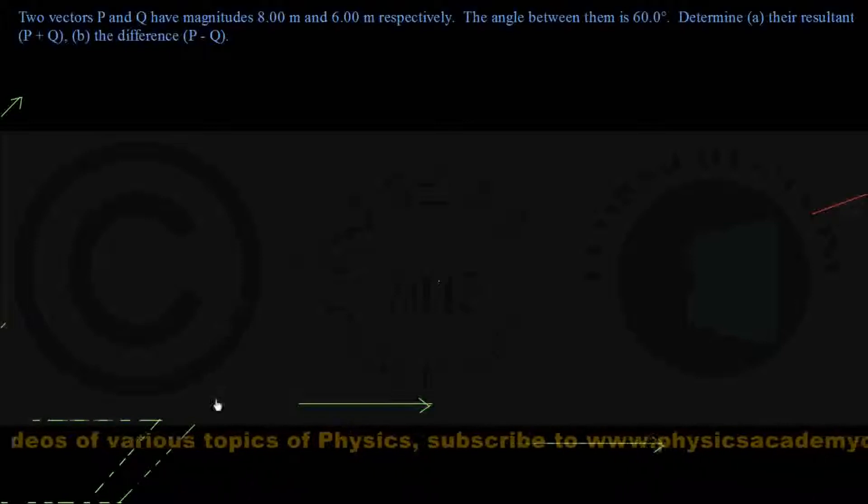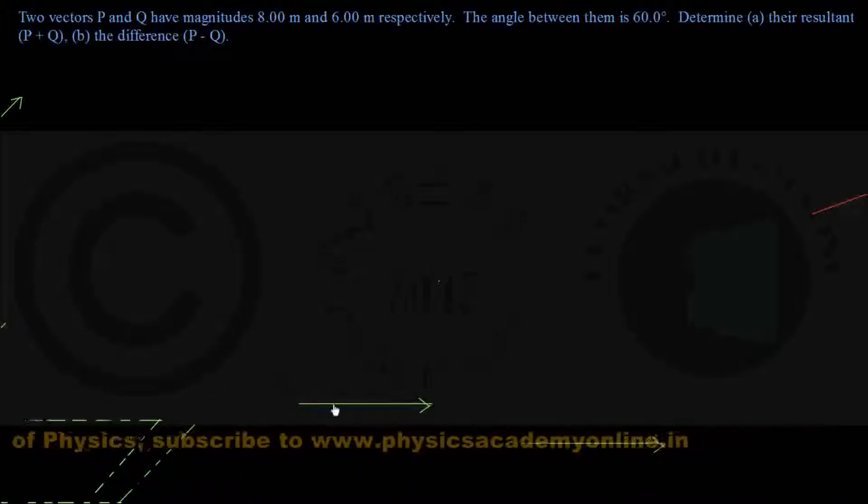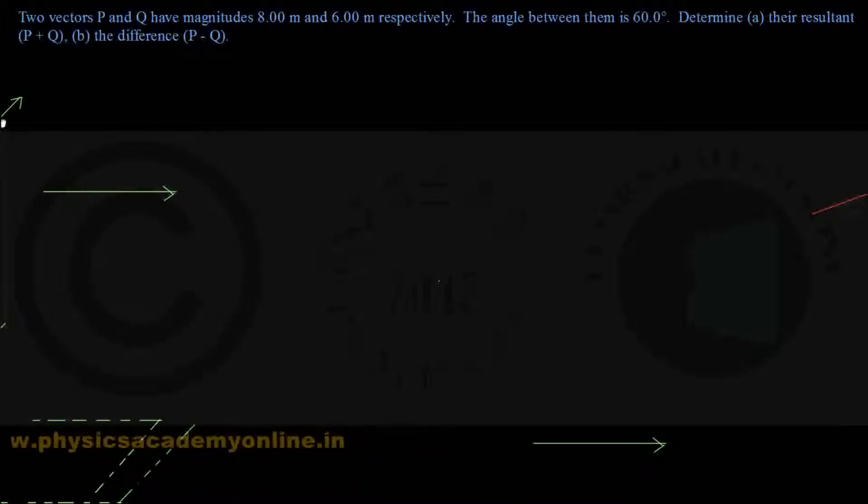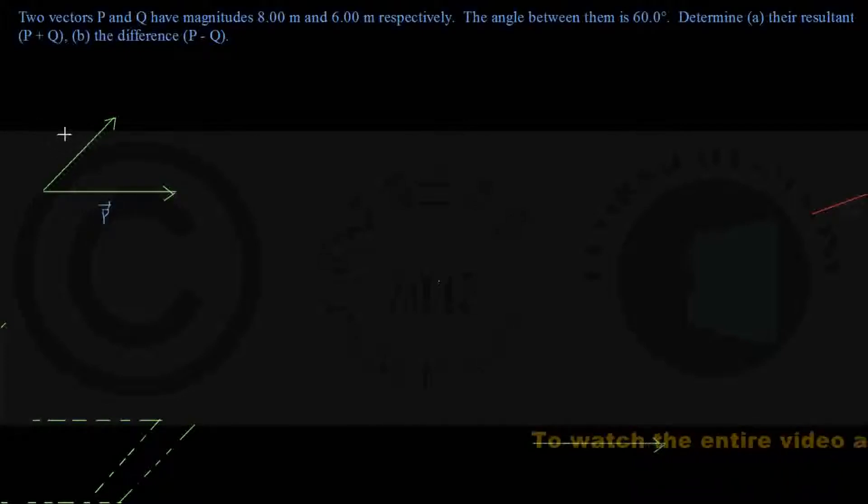Let's visualize the question. Suppose this is vector P and here is vector Q. The angle between them is 60 degrees.